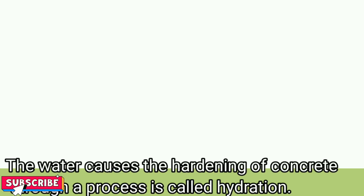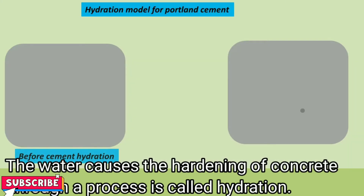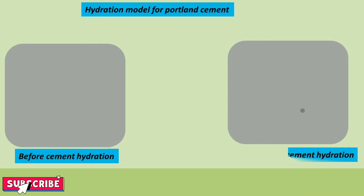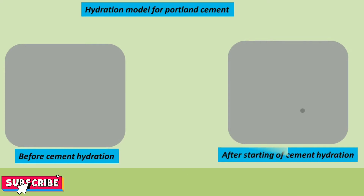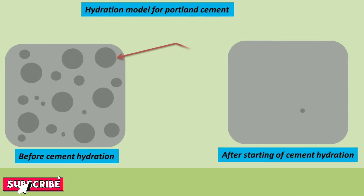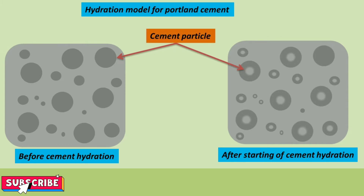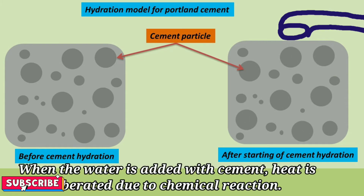Water causes the hardening of concrete through a process called hydration. Water is added to cement, and a chemical reaction occurs between cement and water. That process is called hydration.